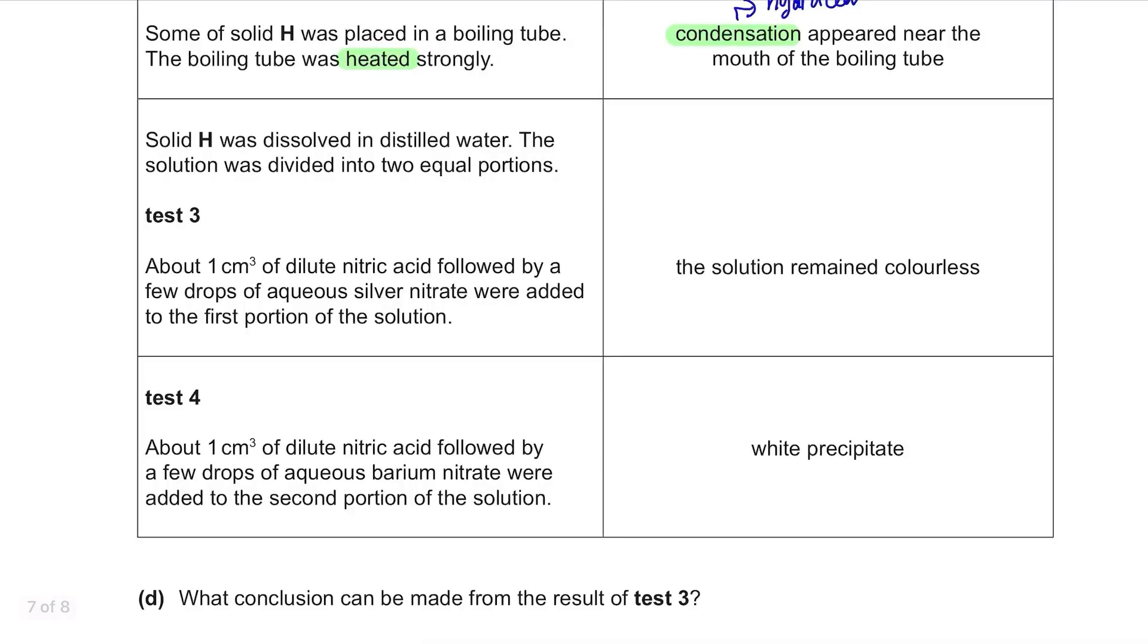Solid H was dissolved in distilled water. The solution was divided into two equal portions. Test 3. About 1 cm³ of dilute nitric acid followed by a few drops of aqueous silver nitrate were added to the first portion of the solution. The solution remained colourless. Adding dilute nitric acid and silver nitrate is a test for halide ions, Cl⁻, Br⁻, and I⁻. If the solution remained colourless, it means that the solution does not contain any of the halide ions.